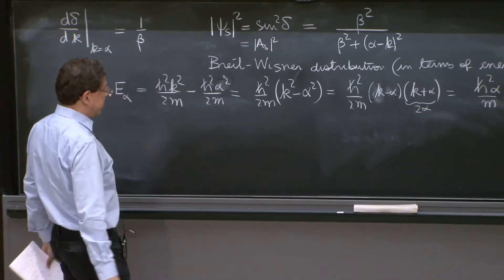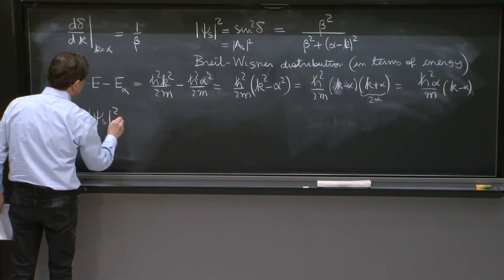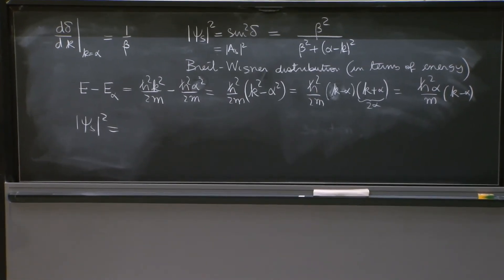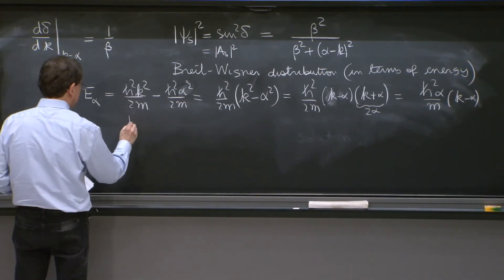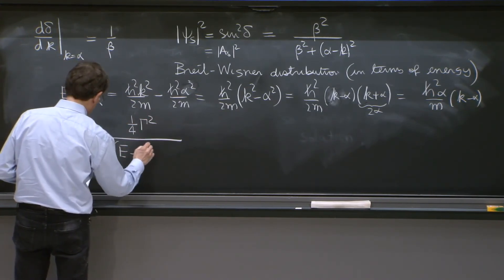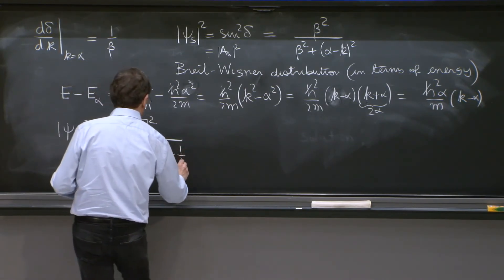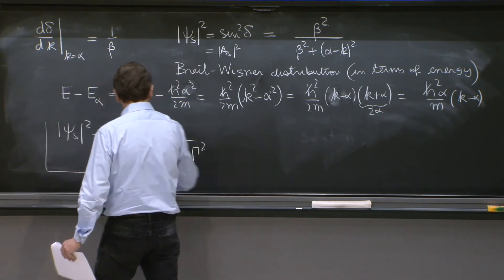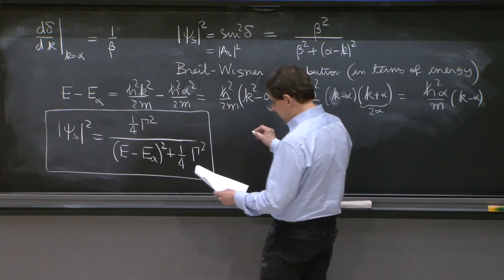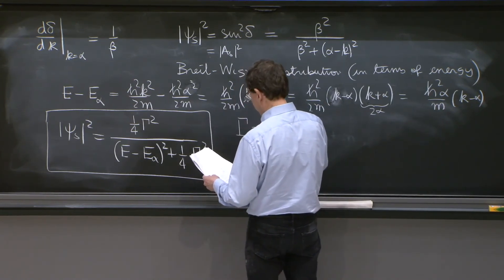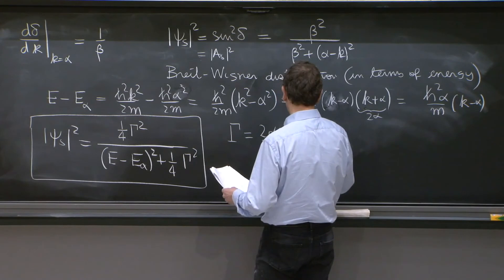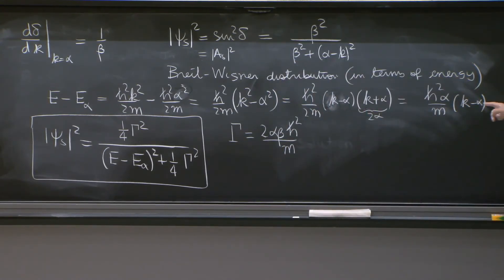So that's a little help. So then |ψS|², doing a little more of algebra with the constants there—probably, if you want to do it, leave two lines—it's really simple. It's always written in this form. Again, 1 over 4, γ² over (E minus Eα)² plus 1 over 4 γ². And that's the so-called Breit-Wigner distribution. And γ is a funny concept here. We'll try to understand it better. 2αβℏ² over m.